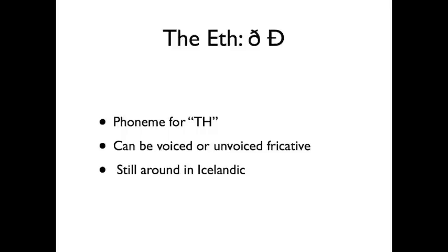Starting off with F. Quick note: the symbols you see on the slide are the lowercase and uppercase versions of the letter F. I will give both the lower and uppercase versions of all the letters we talk about in this video, and they will always appear lowercase followed by uppercase. So the F was a way of saying the phoneme — that is, sound unit — TH, before the letters TH became popular. The F can represent both the voiced and unvoiced fricative form of TH. If you need a refresher on fricatives, see the last video. The F can still be found in the modern Icelandic language, but in Middle English, the F had mostly fallen out of use by the end of the 13th century.